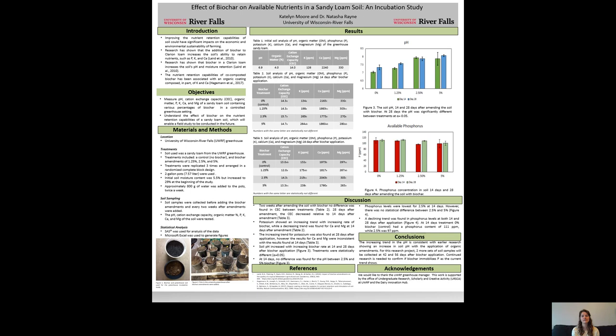We also had some interesting observations pertaining to the soil nutrients of potassium, calcium, magnesium, and phosphorus. As the rate of biochar increased, an increasing trend can be seen for potassium. This was the case for both the 14-day and 28-day sample.